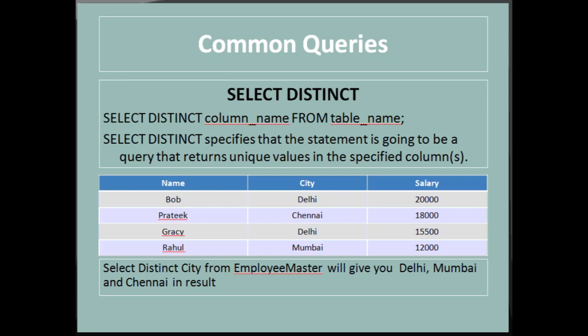Next is DISTINCT: 'SELECT DISTINCT column_name FROM table_name'. SELECT DISTINCT specifies that the query returns unique values in the specified column. For example, 'SELECT DISTINCT city FROM employee_master' will return Delhi, Mumbai, and Chennai — even if Delhi appears more than once in the original data, it will only appear once in the result.